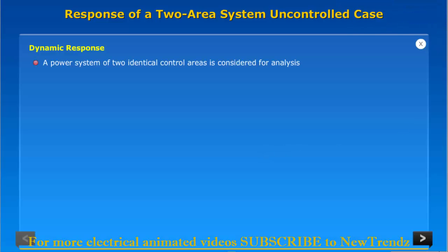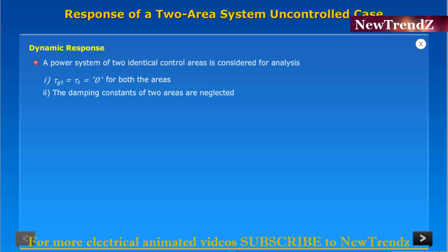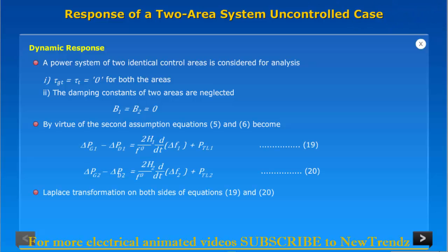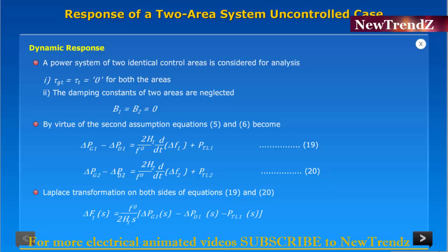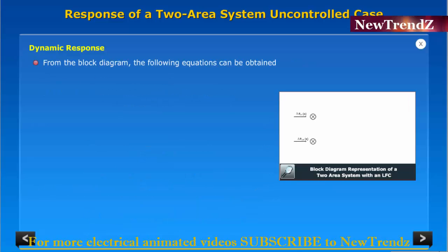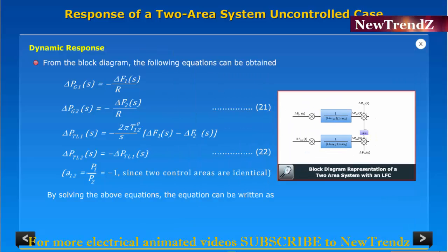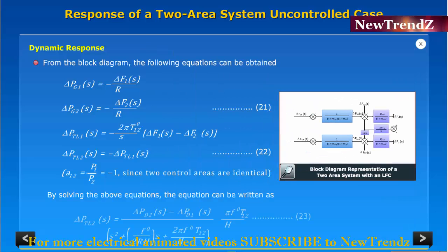For the dynamic response, a power system of two identical control areas is considered for analysis. Load disturbances equal to zero from both areas and the damping constants of the two areas are neglected, so D1 equal to D2 equal to zero. By virtue of these assumptions, equations 5 and 6 are simplified. Taking the Laplace transform of both sides of equations 19 and 20, and using the block diagram, the following equations are obtained and solved to yield the resulting expression.